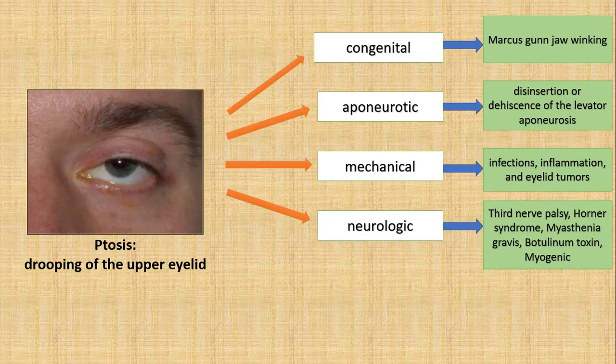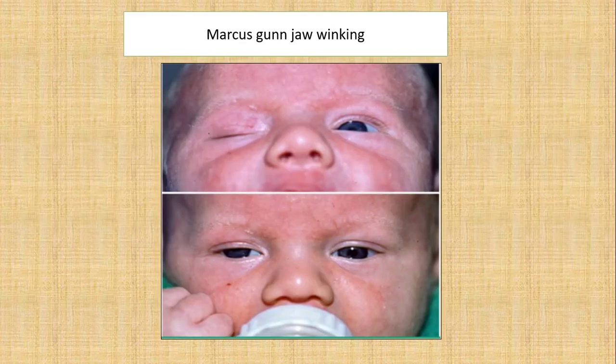Marcus Gunn jaw winking occurs in patients who may have congenitally aberrant innervation of the levator muscle by the mandibular branch of the trigeminal nerve. When the patient contracts the pterygoid muscle during sucking, jaw opening, or lateral jaw movement, the eye will open.